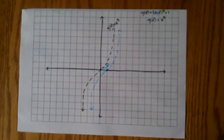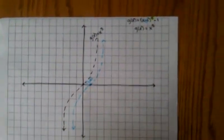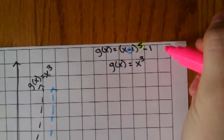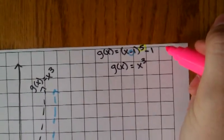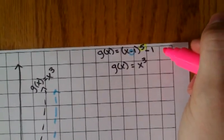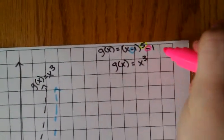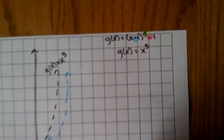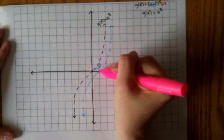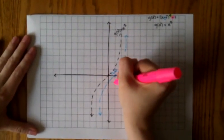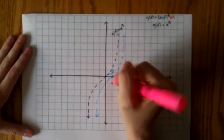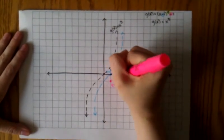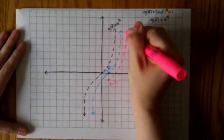After this, we do whatever is outside the parenthesis, which is -1. If it's outside the parenthesis, then we move it up or down. Because it's negative, it means we move it down 1. We go from our last graph and move this down 1. So this would become (1, -1). We redraw the graph.